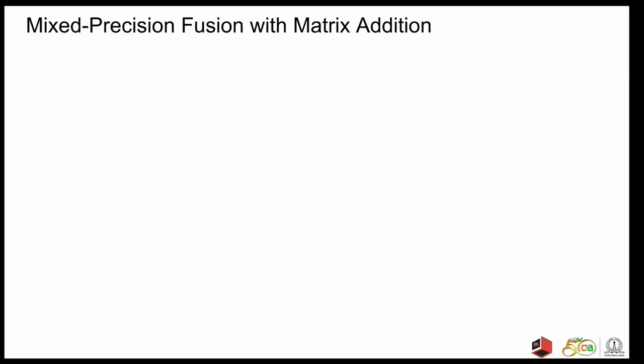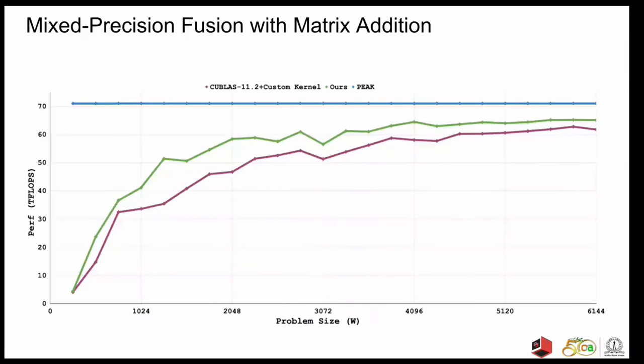However, we see improvements when a fused library implementation is not present. For example, matrix addition followed by matmul does not have a fused library implementation. Here we present the comparison of our automatically generated fused kernels with cuBLAS matmul followed by a custom handwritten kernel performing matrix addition. Because of the redundant loads and stores, we see improvements up to 1.28 times over the non-fused counterparts.